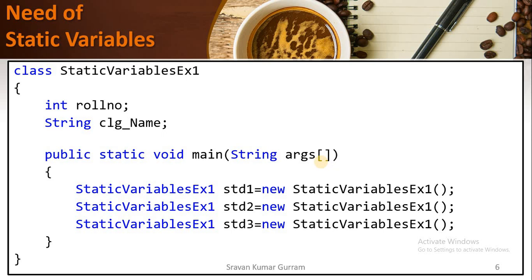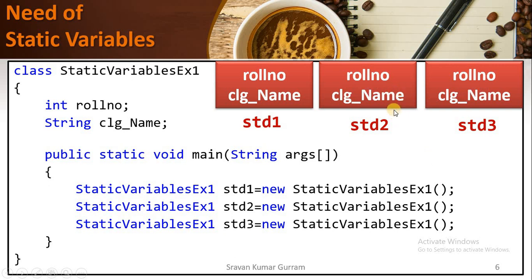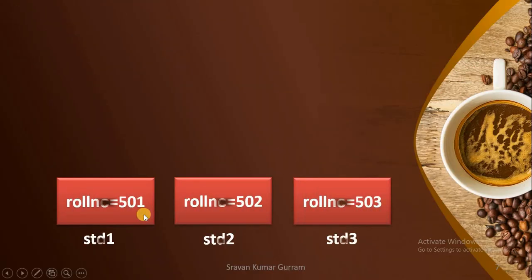The intention of this program is to maintain student data. When you create object student1, an object is created in the heap memory, and separate slots are created for the instance variables: roll number and college name. When you create second and third objects, memory is also allocated in heap memory with separate slots for all instance variables. These three objects represent three different students.